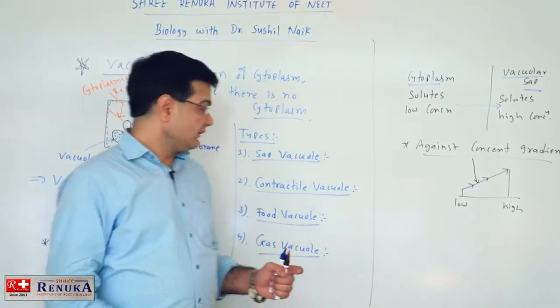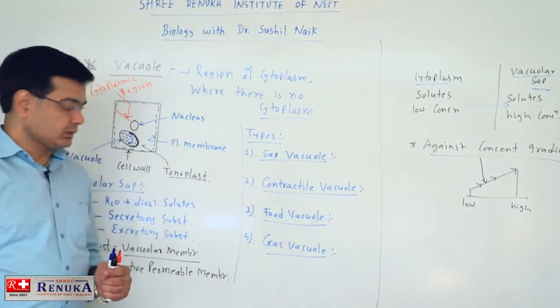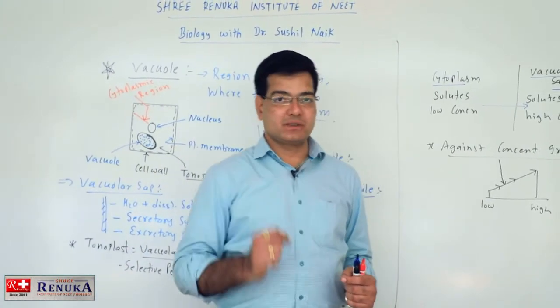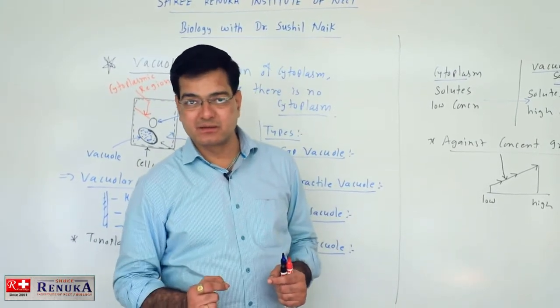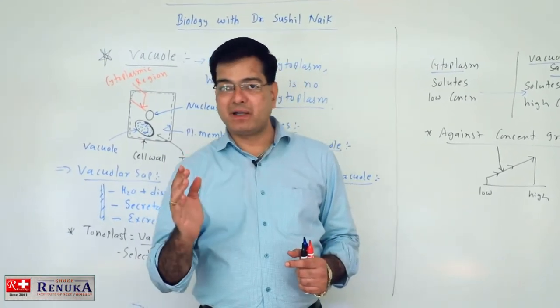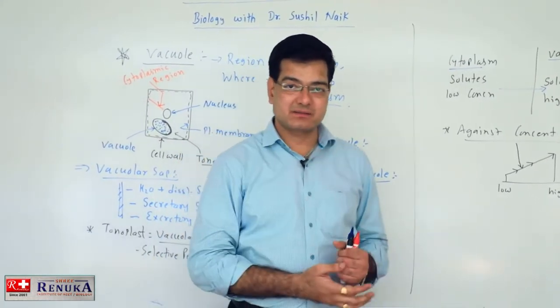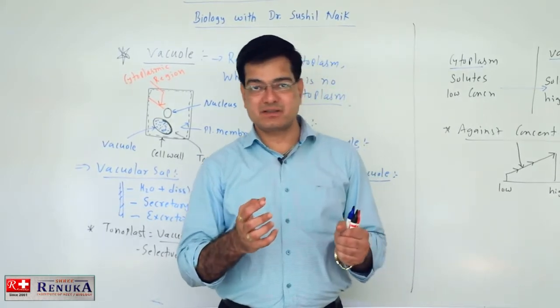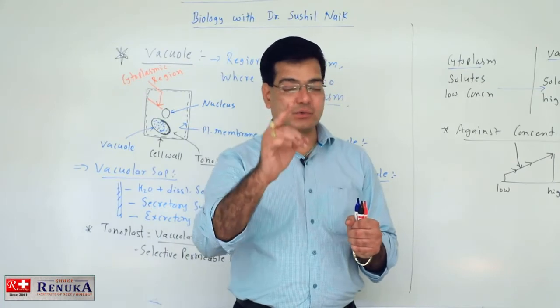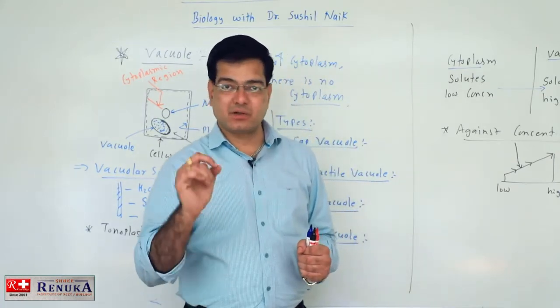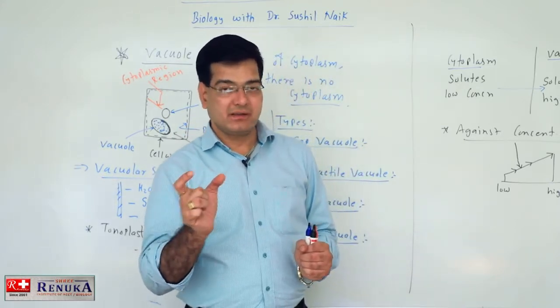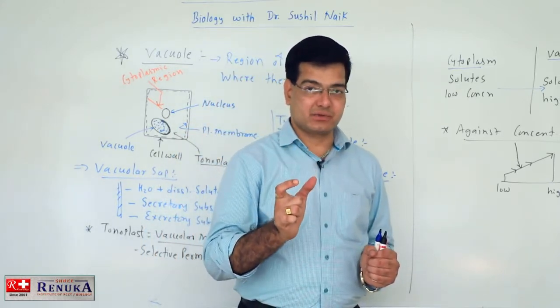Now we talk about the contractile vacuole. Contractile vacuole is found in the protozoans like amoeba. In the case of amoeba, the contractile vacuole is formed by the excretory substances. As the excretory substances accumulate inside the cytoplasmic region where there is no cytoplasm, it is called a contractile vacuole. The word contractile vacuole means it undergoes contraction and relaxation.